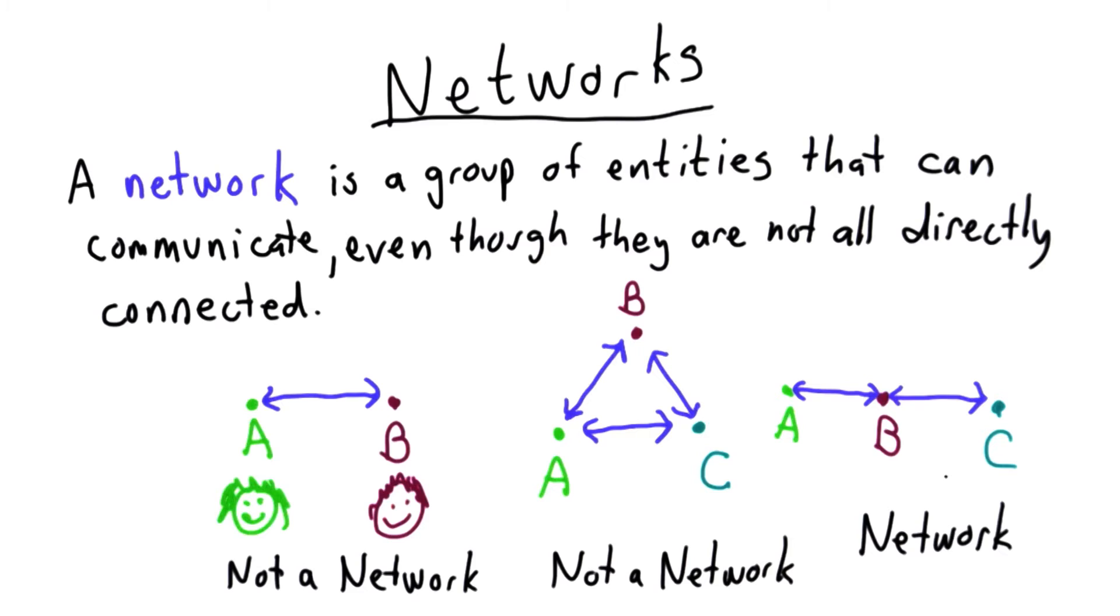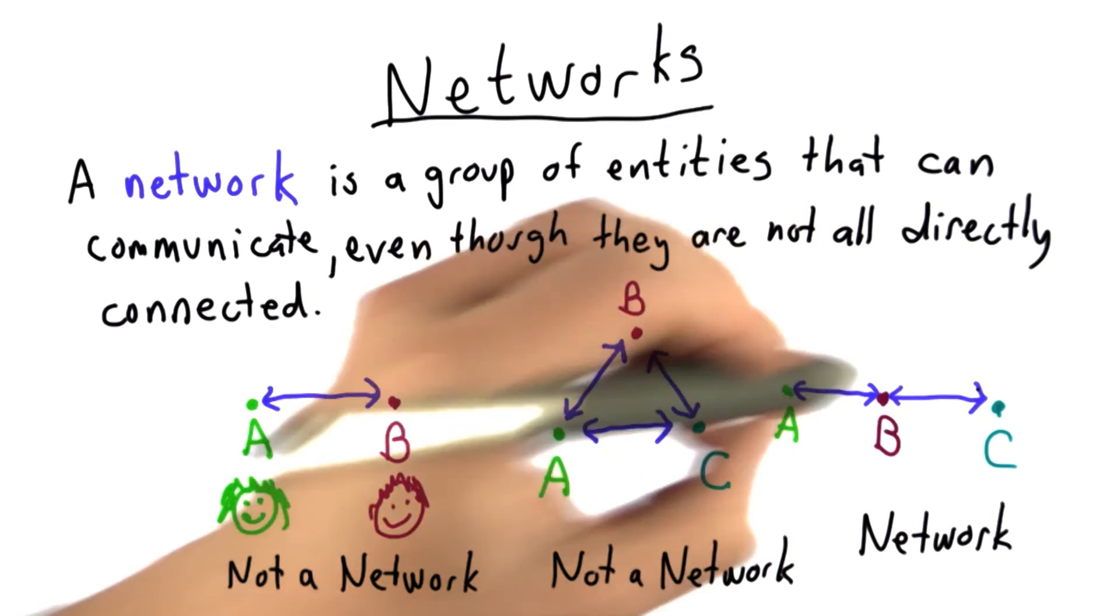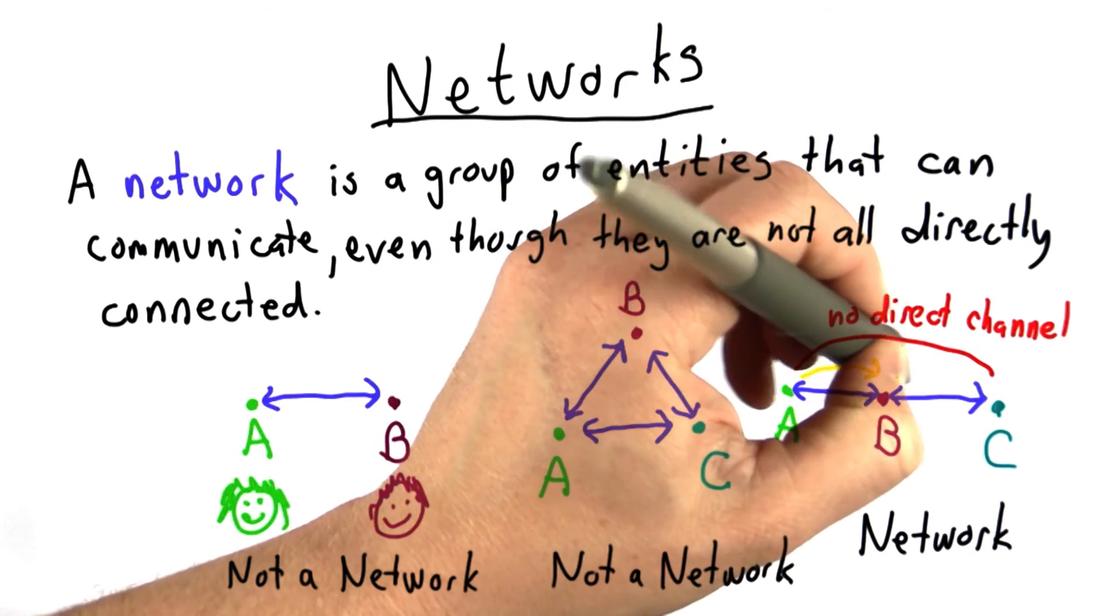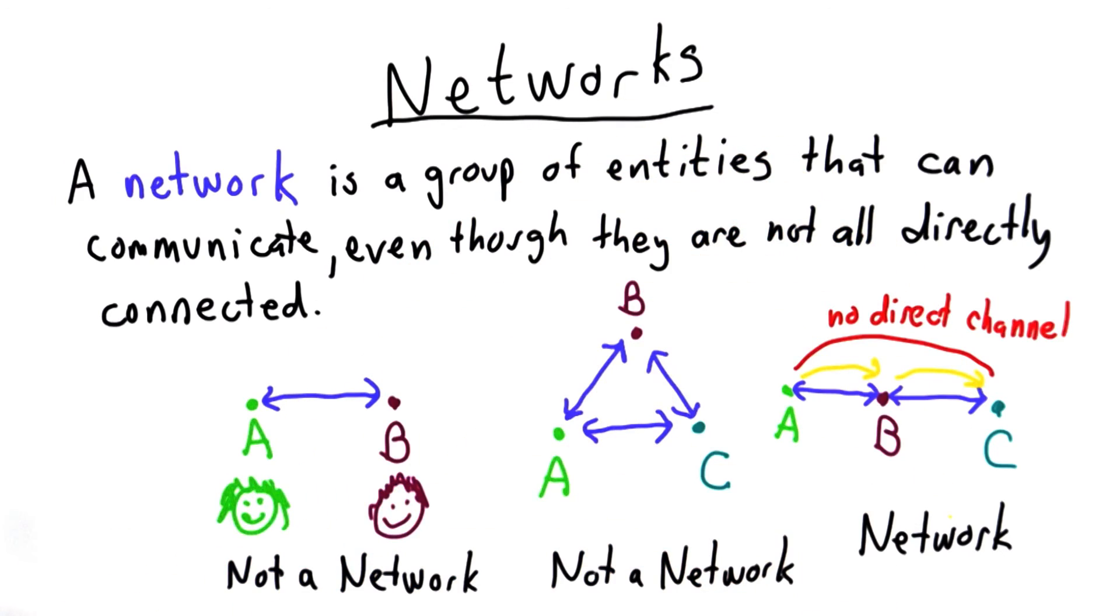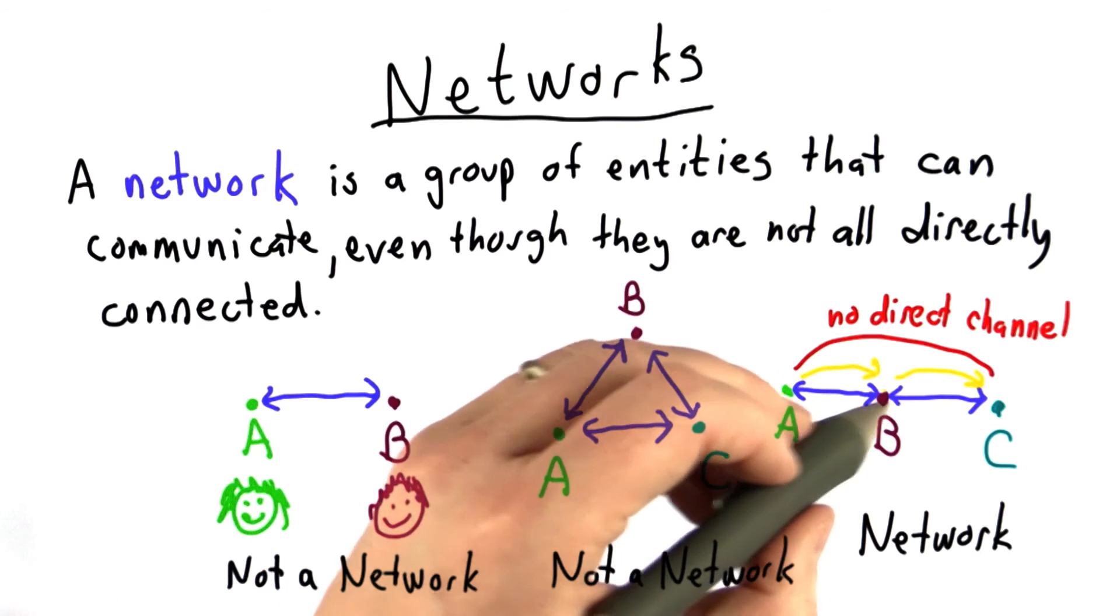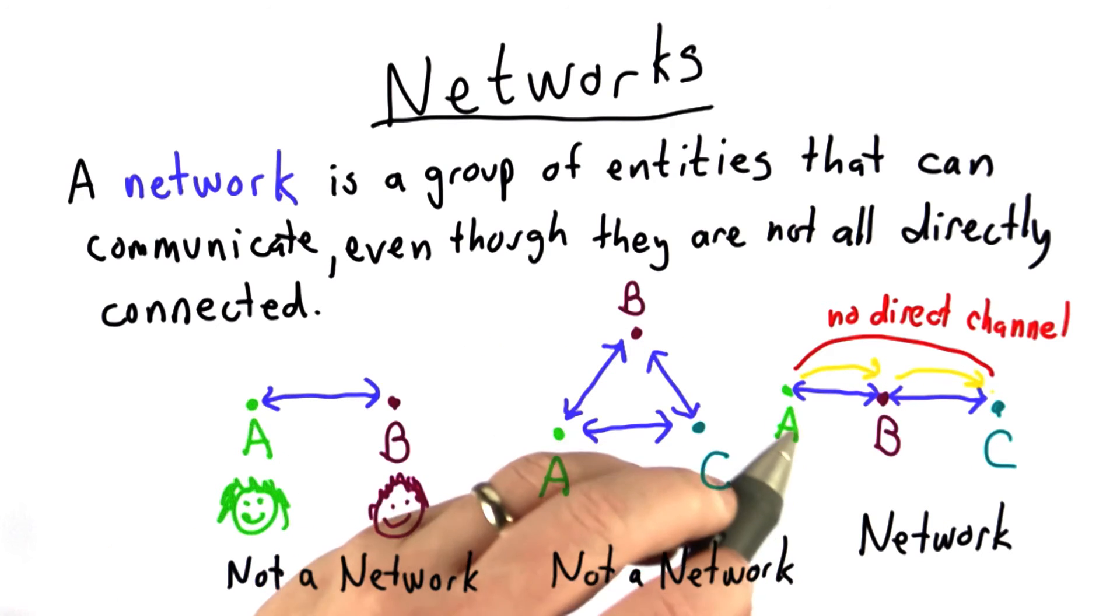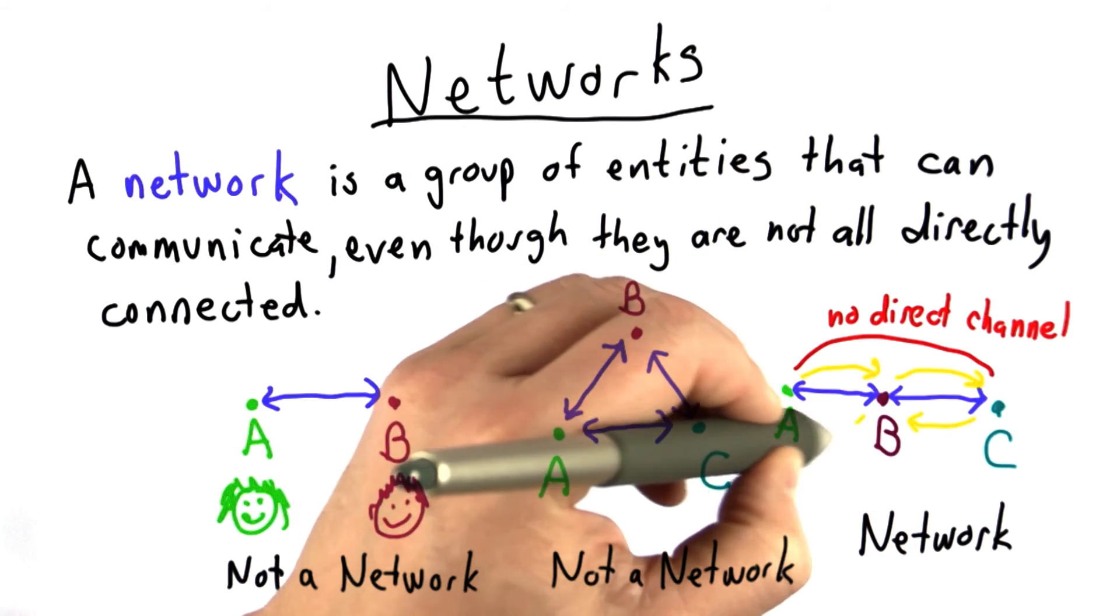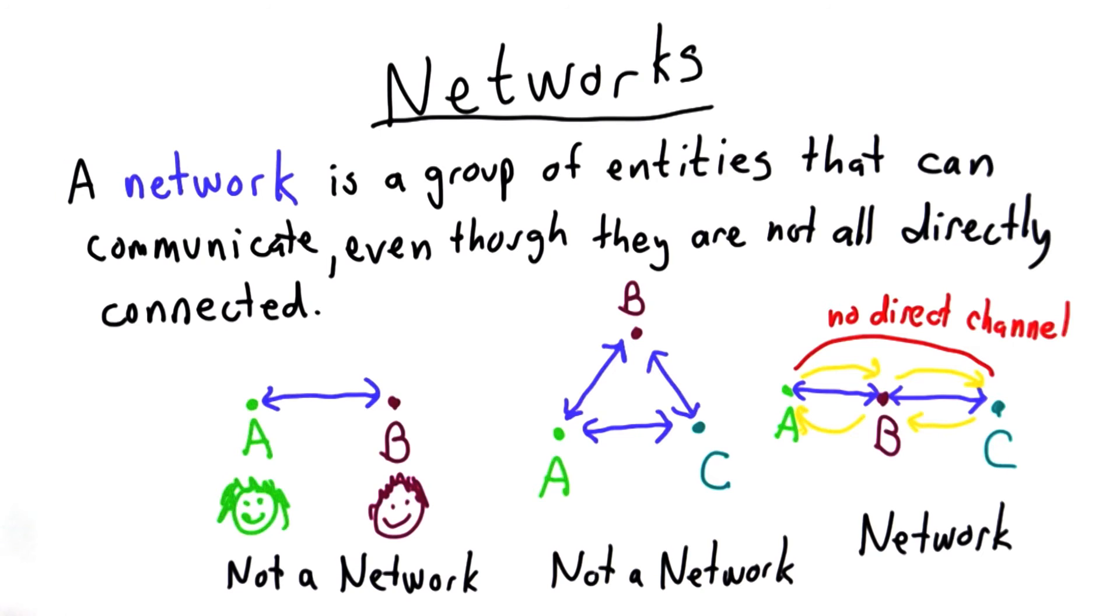But now, Alice is not directly connected to Charlie. But there's a way that Alice can send a message to Charlie. And she can send the message because Bob will forward the message for her. Once the message goes through two hops, to make it so two people who are not directly connected can communicate, and maybe Charlie can also send messages back to Alice, then we call it a network.